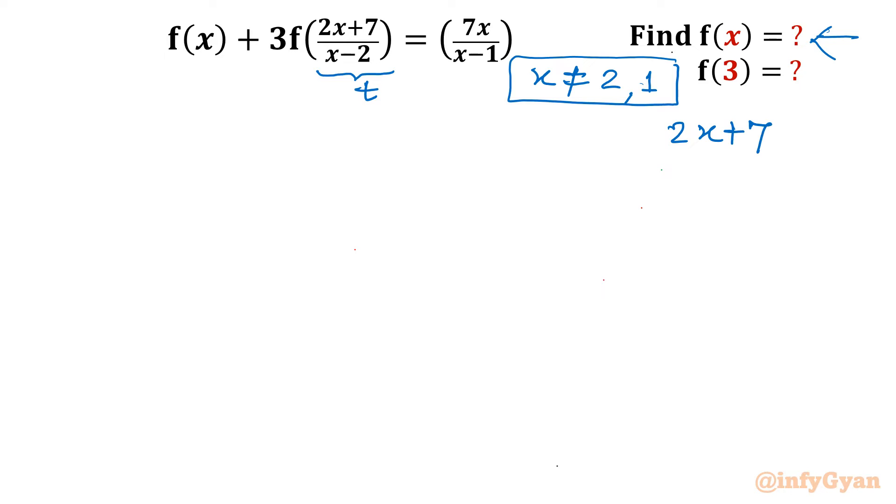Something very interesting is about to come. (2x+7)/(x-2) = t. Cross multiply: 2x + 7 = xt - 2t. Then I can write 2t + 7 equals, if I take x common, then t - 2 in the bracket. So x = (2t+7)/(t-2).